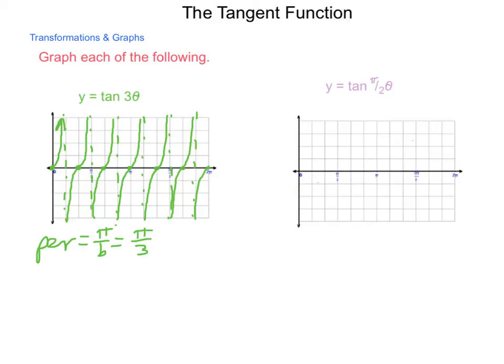Let's see how this looks with a different period. So, we're graphing tangent of pi halves theta. So, our period in this case is equal to pi divided by pi halves.